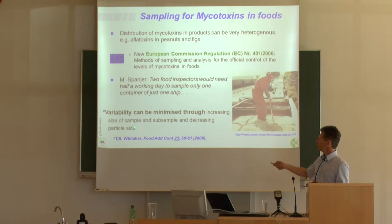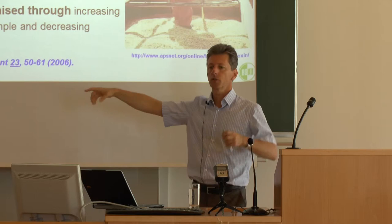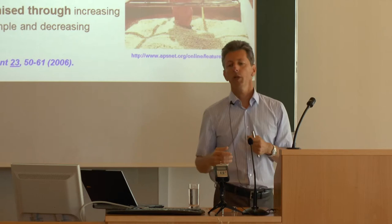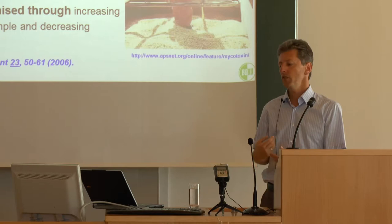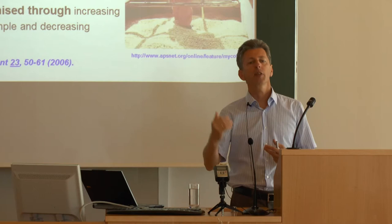The variability of mycotoxin contamination can be minimized by increasing the size of the sample — the larger your sample, the more representative it is — and also by decreasing the particle size. As a rule of thumb when advising on homogenization, we say samples should ideally be homogenized to a grain size of less than 500 micrometers. That is one very important aspect.